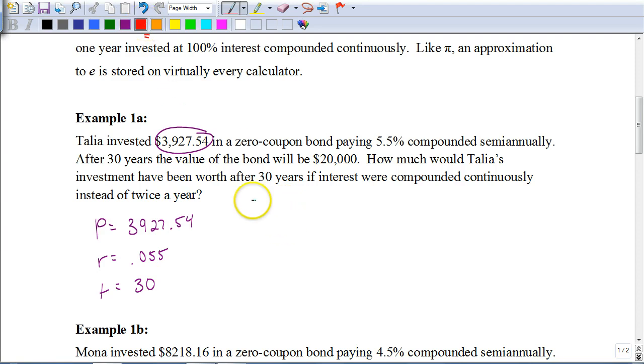Well, we would take the amount would be your principal, $3,927.54, times E. Remember, E is not a variable. E is a number. And then your exponent is going to be your rate, which is 0.055, times the time, which is 30.